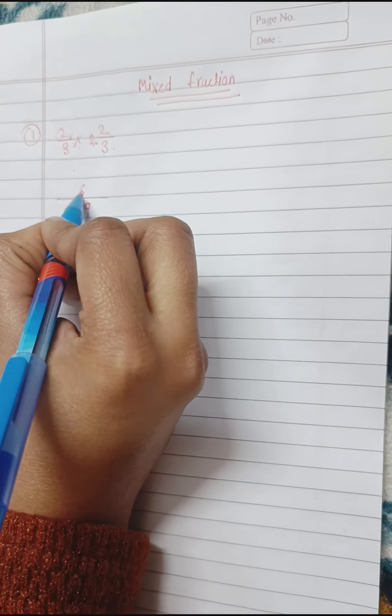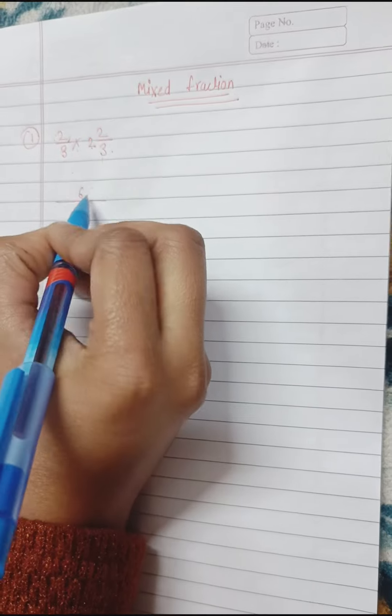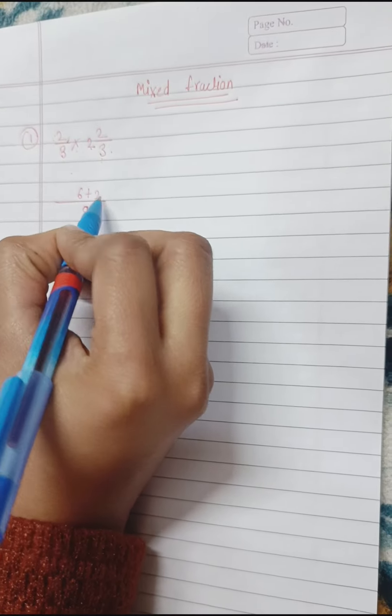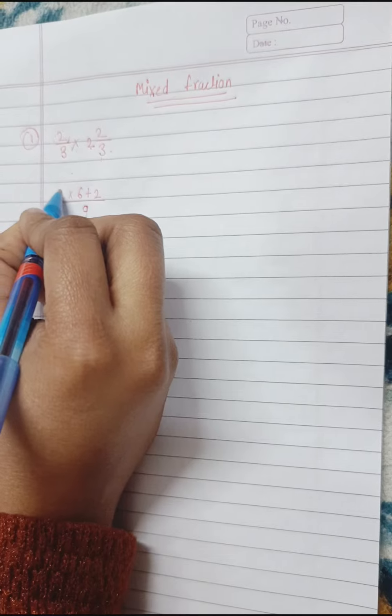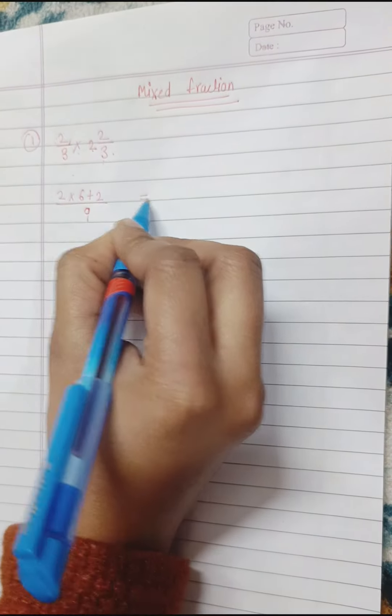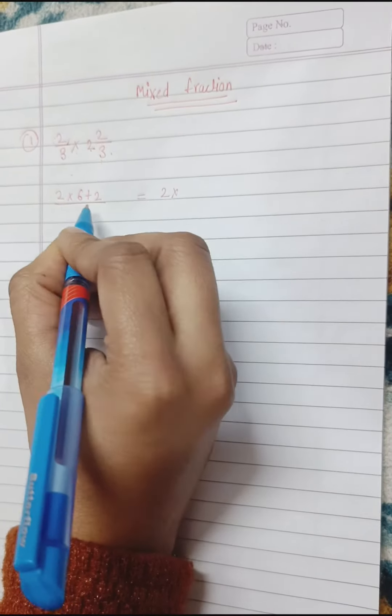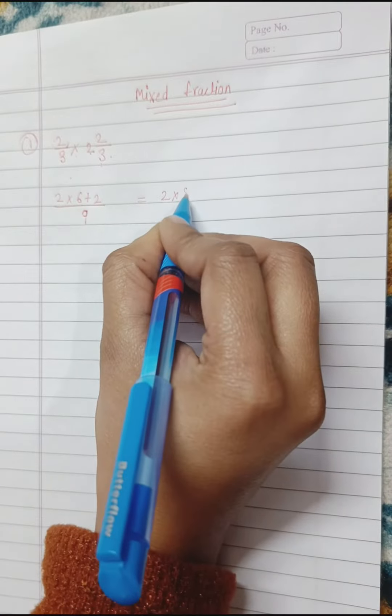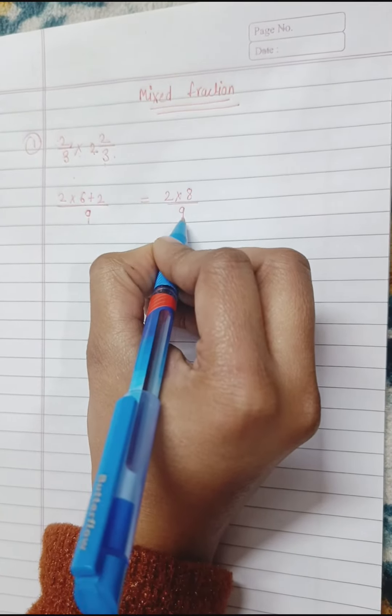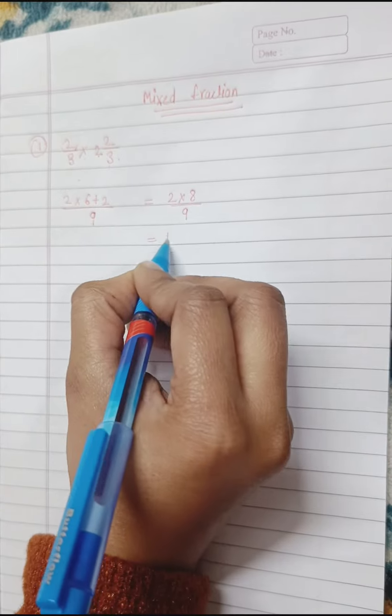As I mentioned in the previous video, we have 2, as it is, multiply by 2. Is equal to 2 multiply 6 and 2, 8, upon 9. 8 times 2 is 16.